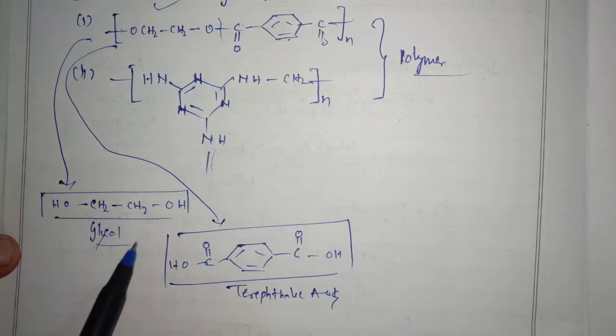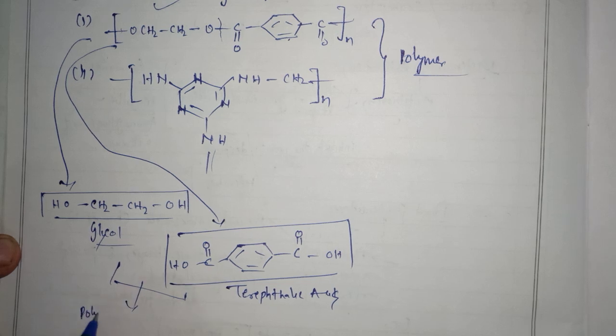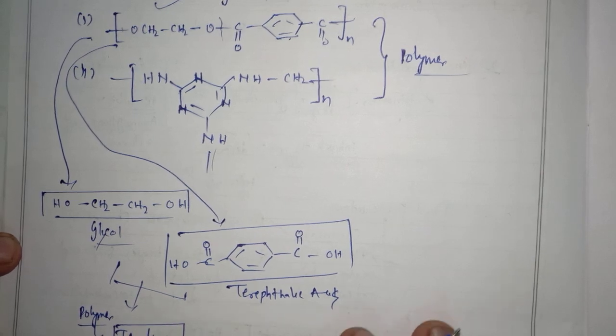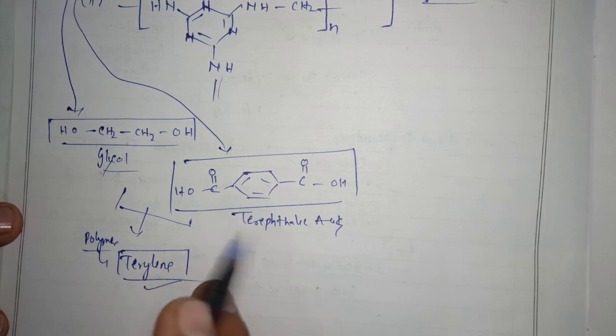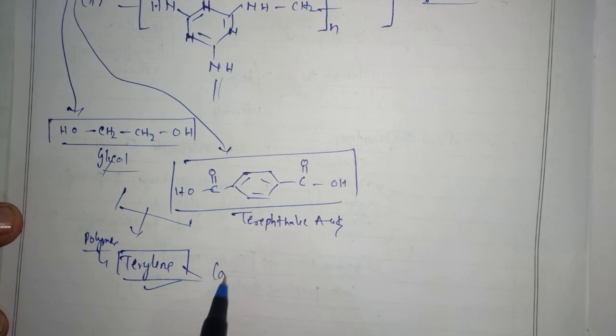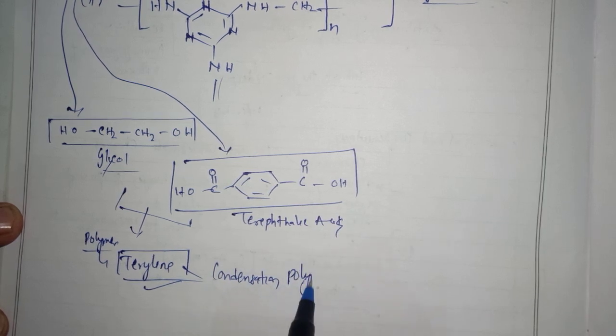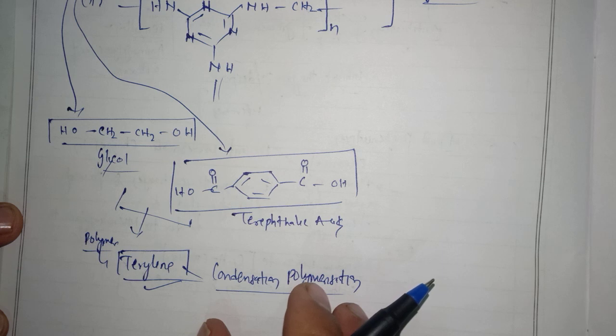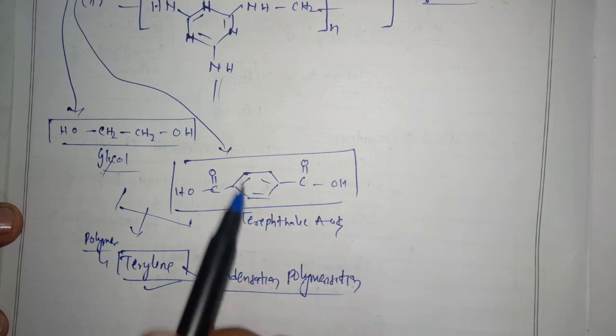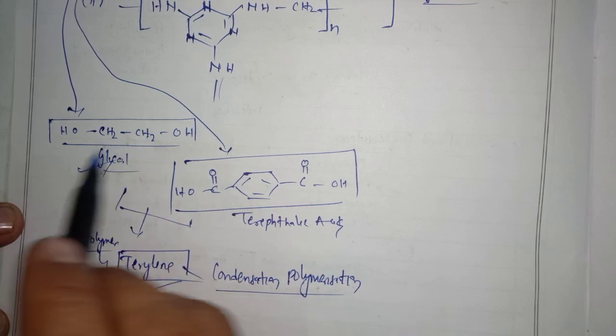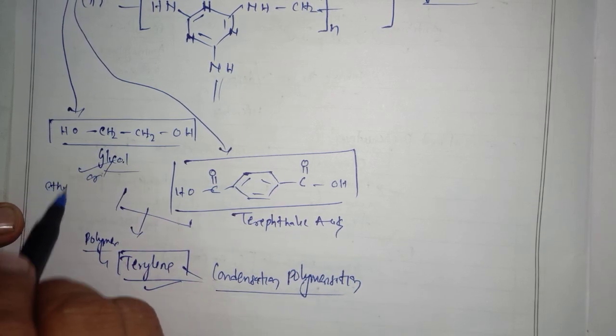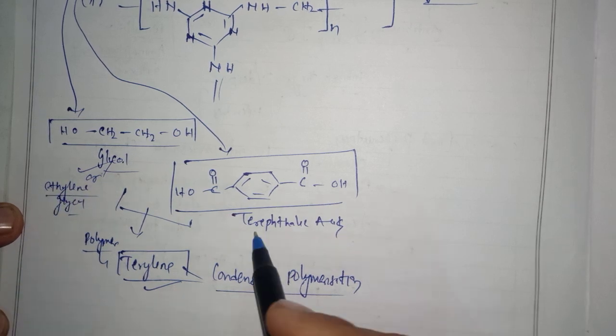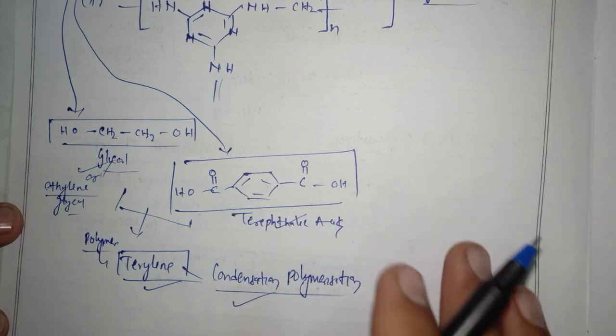Now if you want to express what is the polymer name, your polymer name is terylene, and it is a product of condensation polymerization. So here we found that this is a repeated polymerization which takes place between two bifunctional monomers known as ethylene glycol and terephthalic acid. It is a condensation polymer.